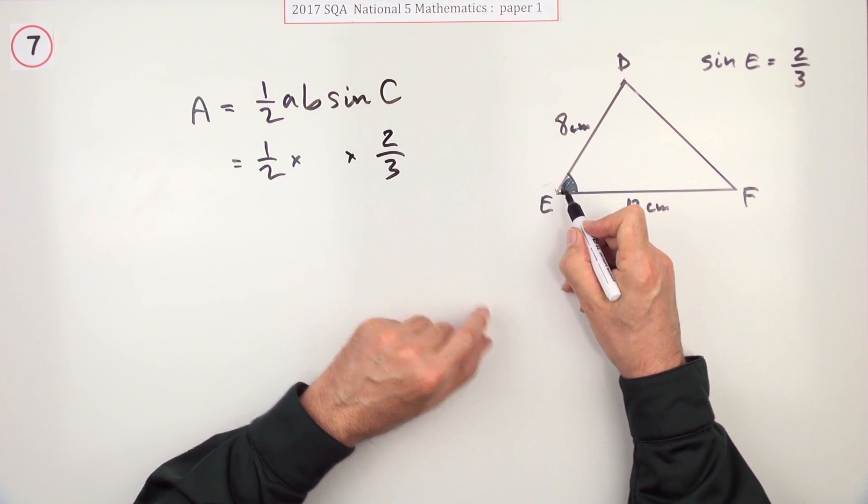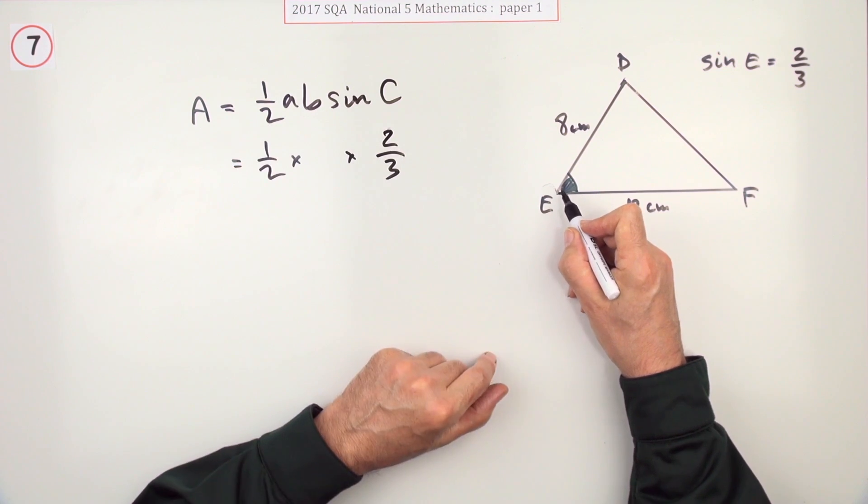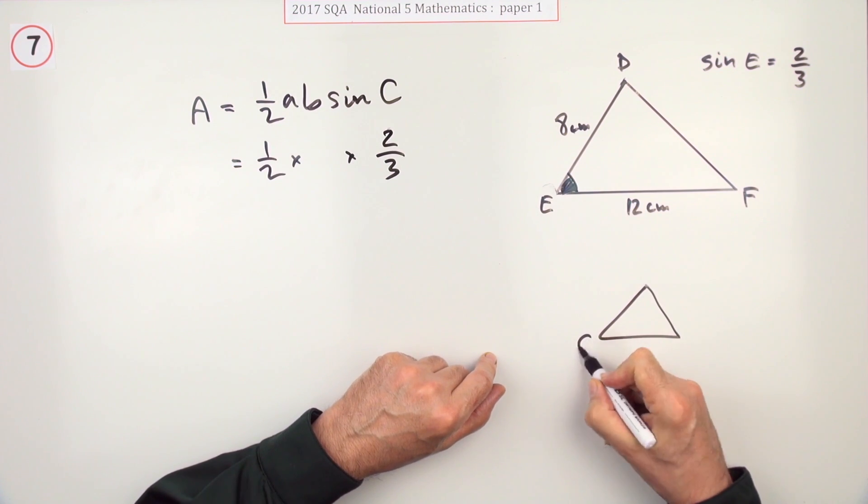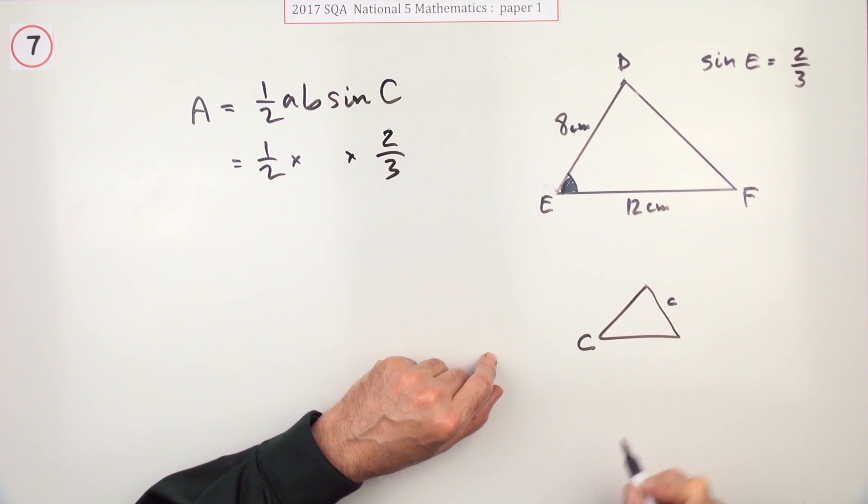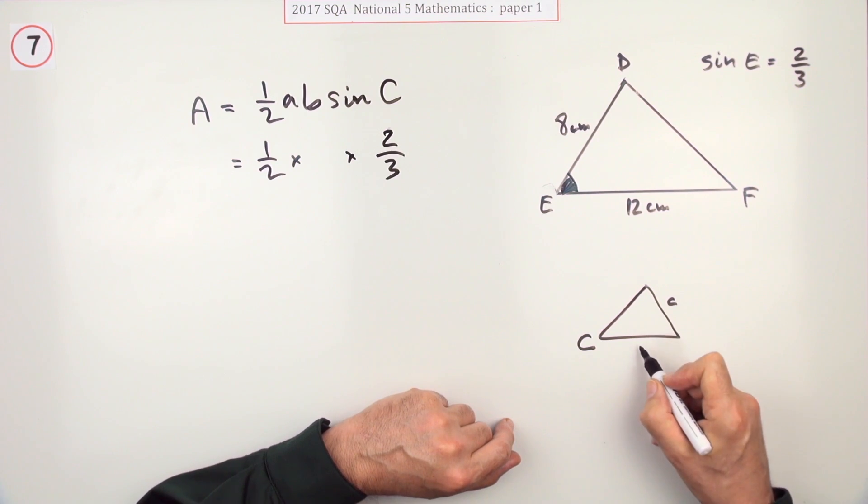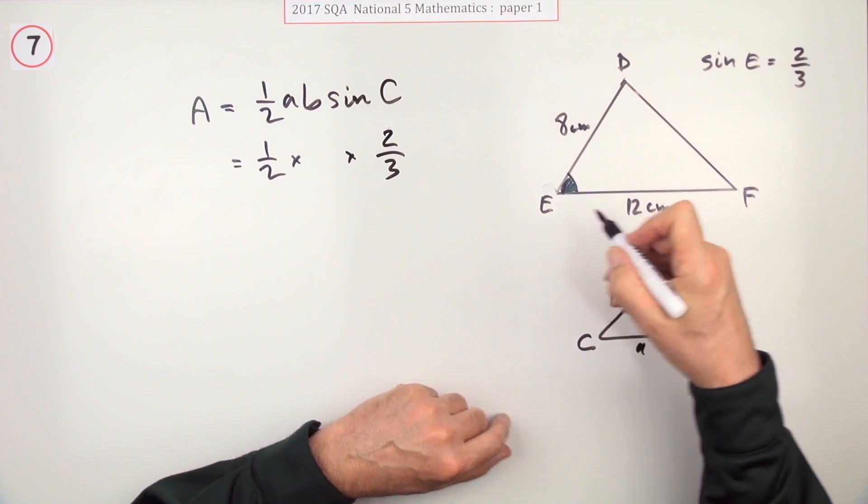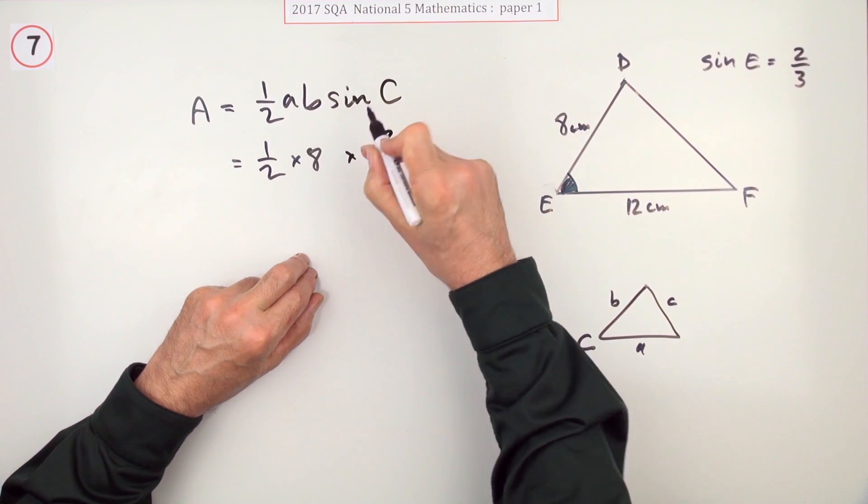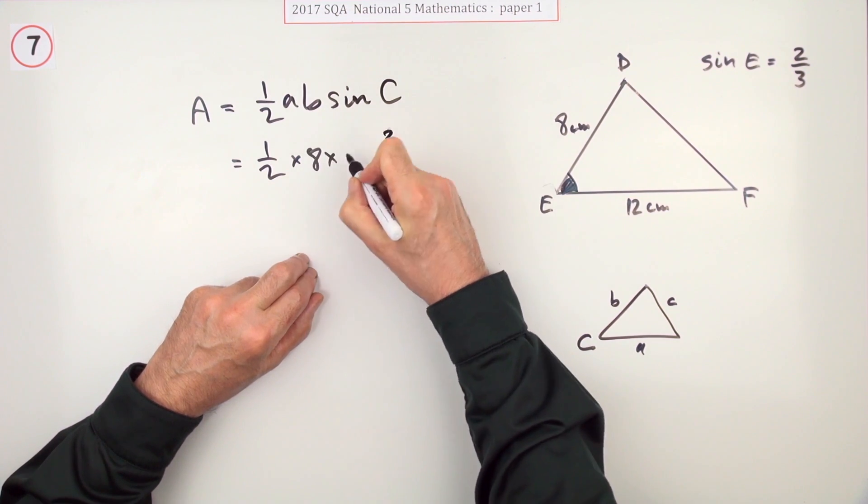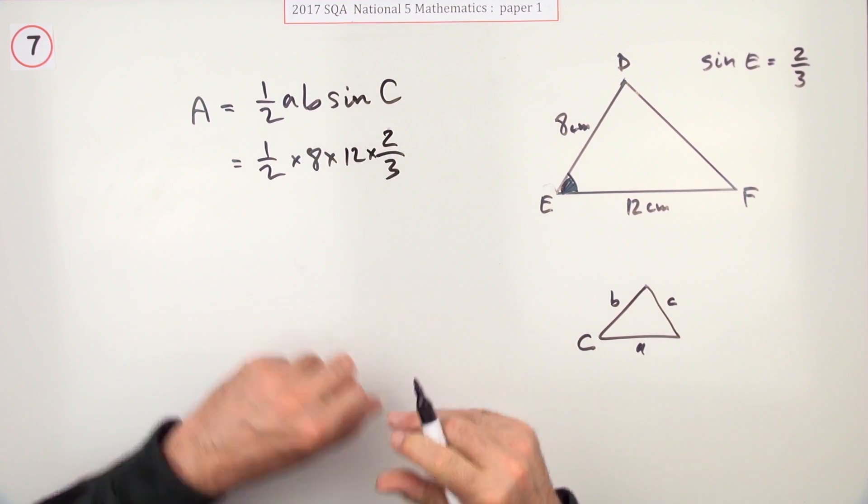So translating that would be, it must be two sides times the sin of C, which must be this two thirds. So if that's side C, and remember, if it was named with a C here, that's the side that's named small C. So the other two sides must be the A and the B. So that would be the 8 and the 12. So it must be times 8 times 12 times that.